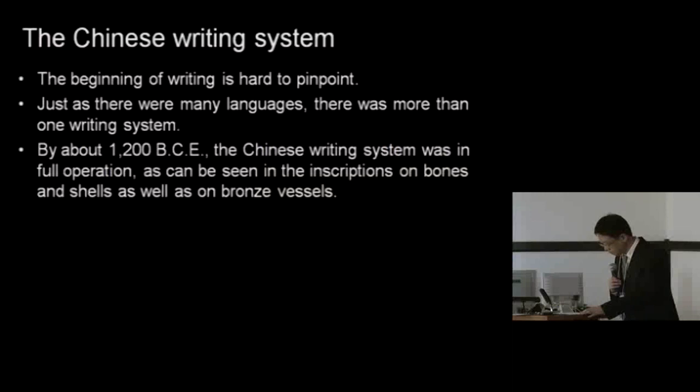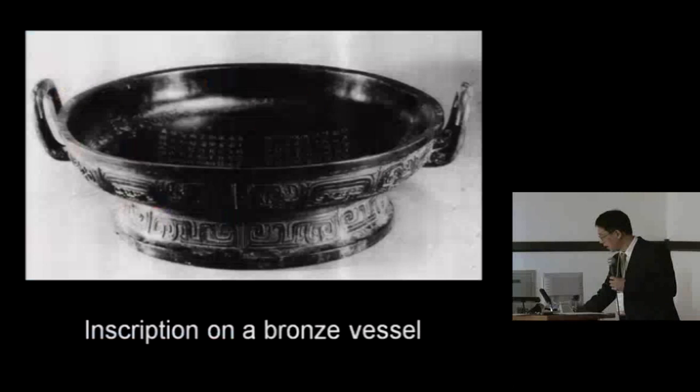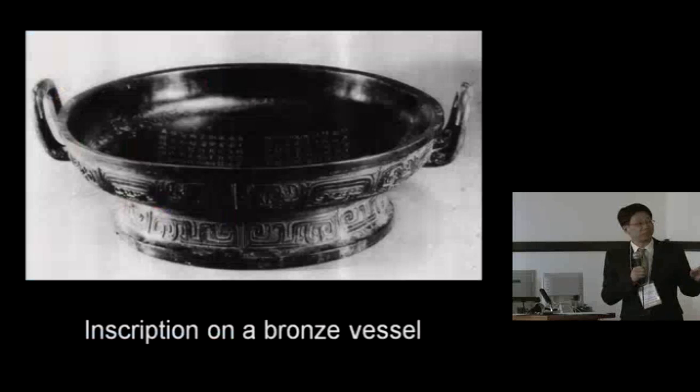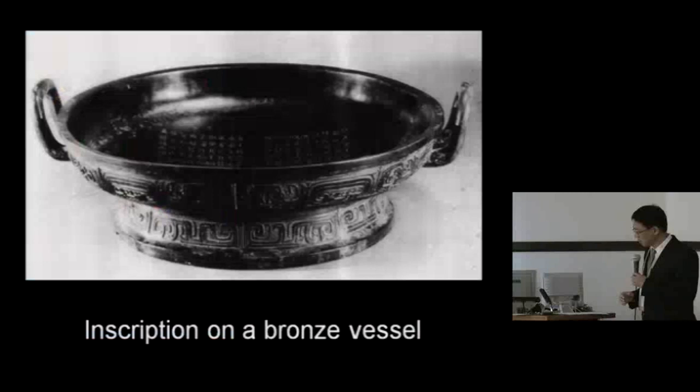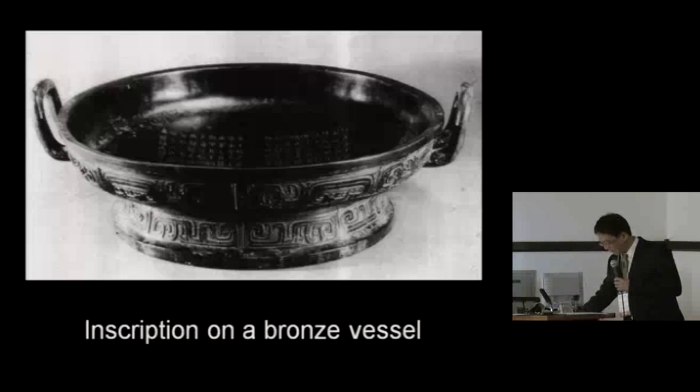For a writing system that's better preserved and better documented, we should turn to the evidence from the Shang — the inscriptions on bones and shells — and the Western Zhou — the inscriptions on bronze vessels. Here is an inscription on a turtle plastron, and this is the Shi Qiang Pan, where you can see how the inscription is cast on the interior of the vessel.